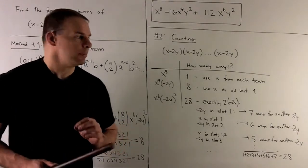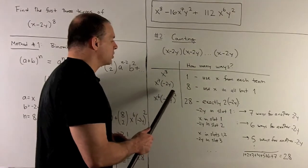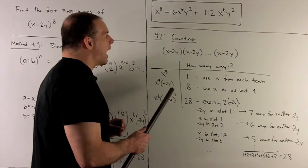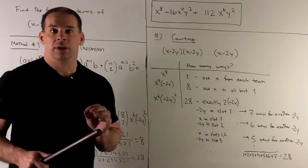Okay, let's take a look at our last term. x^6 times (-2y)^2. So, the idea is going to be we're going to want to pick -2y twice from our sets of parentheses.